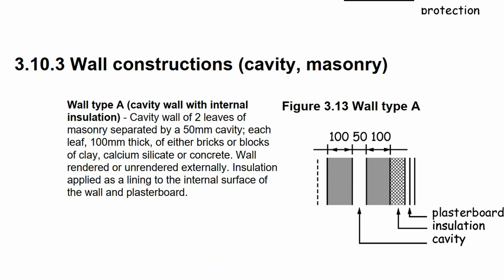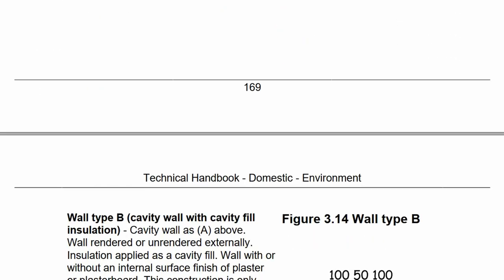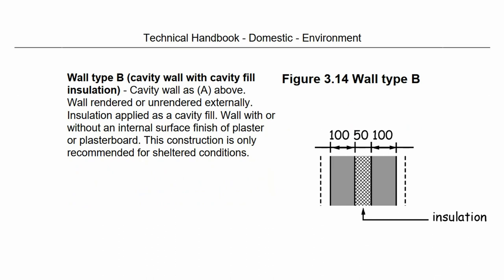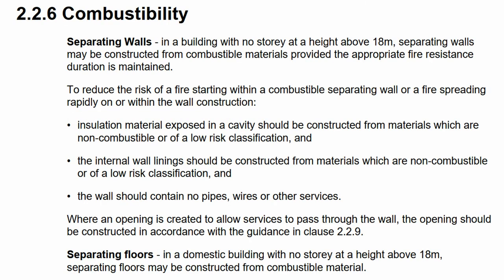The Scottish Building Regulations allow for three main placements of insulation when it comes to cavity walls: internal insulation, full fill insulation, and partial fill insulation. Students should read the guidance notes within the technical standards for guidance on where each type might be best used. In addition, the technical standards also require that insulation placed within a cavity meets the appropriate levels of combustibility.